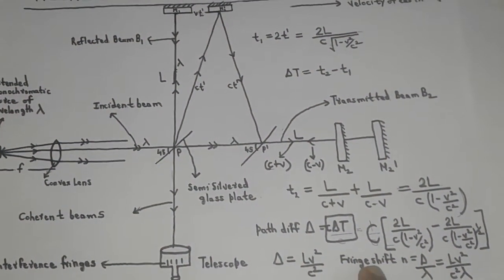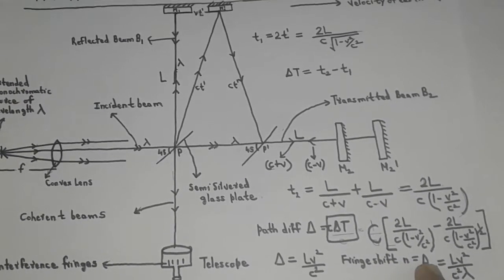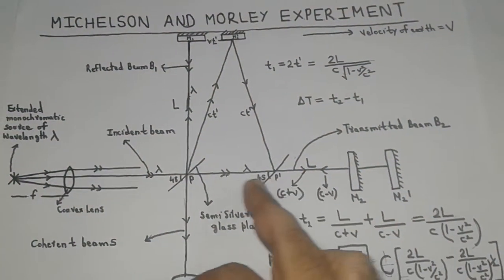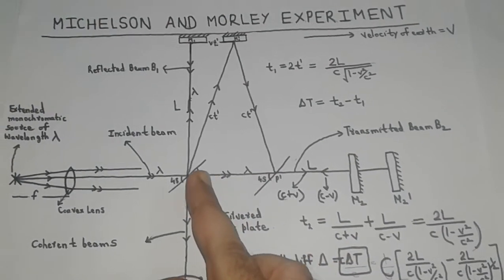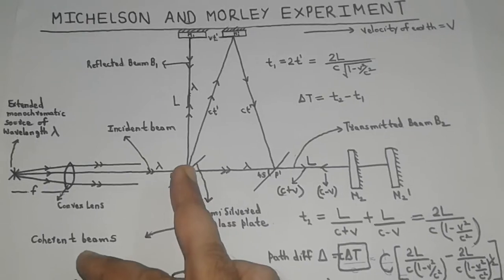Which can also be proved mathematically that if n is 0, then delta is 0, if delta is 0, then delta t is 0. It means the two beams are arriving at the plate P, which is assumed to be stationary ether, at the same time.